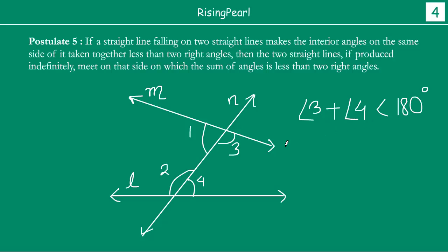Euclid states that on this side, if you extend line L and extend line M, somewhere far away these two lines will actually intersect. And they will not intersect on the opposite side — that is what the postulate says.